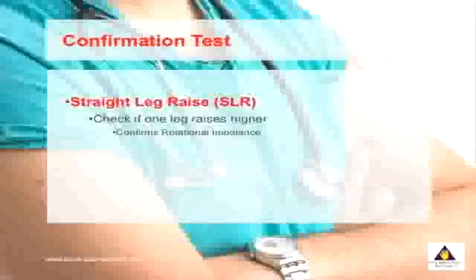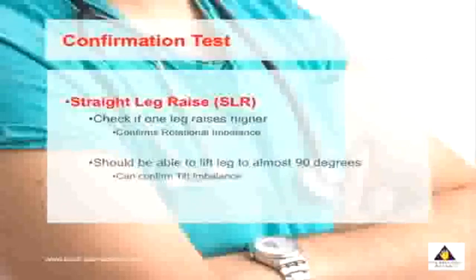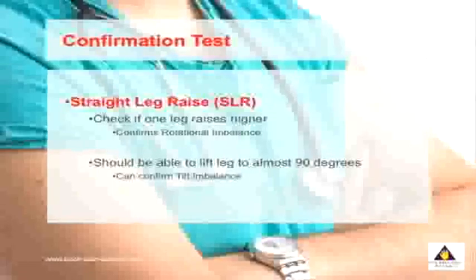There are two things you will note. First, you may find that you can lift one leg higher than the other — if this is the case, it confirms that you have a rotational imbalance. Secondly, you should be able to lift your leg up to almost 90 degrees. If you find that you can't reach 90 degrees and both legs are similar, then you may have those tilt type imbalances.